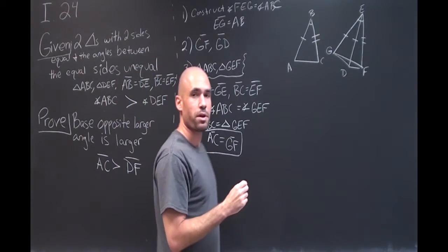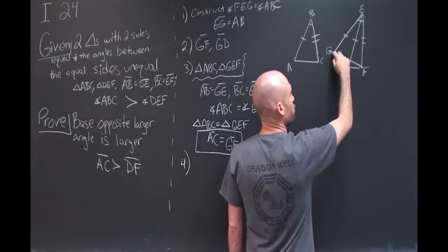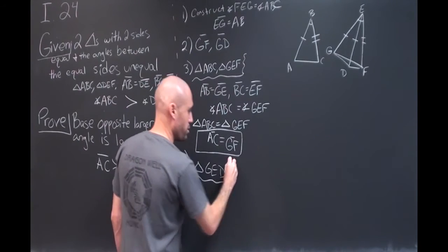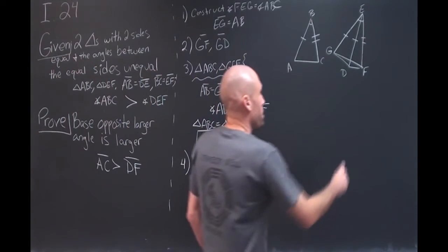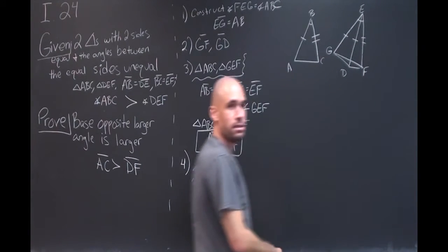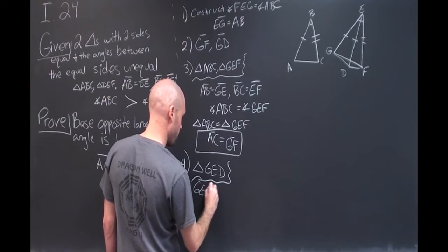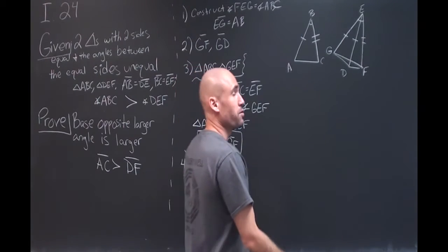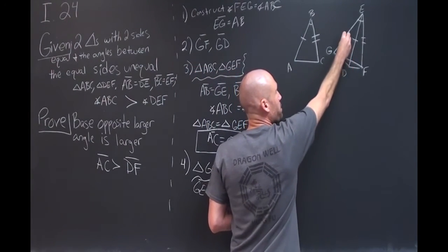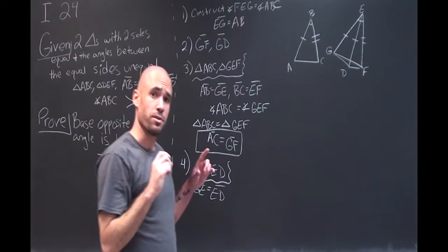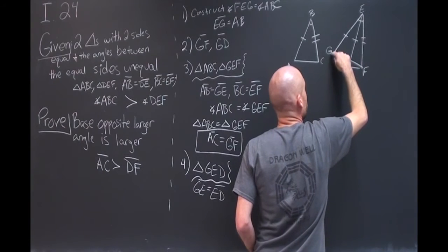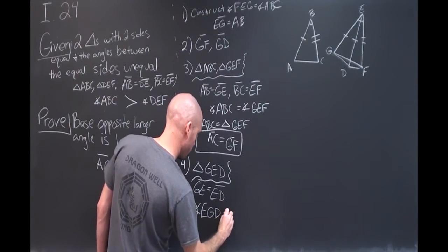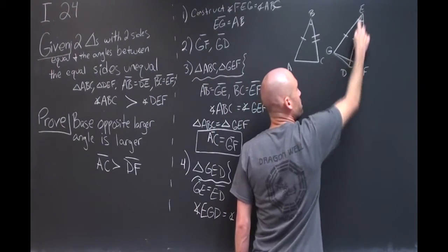The next thing we need to do before we start comparing angles is we need to look at the triangle GED. So again I'll just write that triangle here just so we remember which one we're looking at. In triangle GED we know GE and ED are equal. Therefore we have an isosceles triangle and for an isosceles triangle the angles at the base which are opposite the equal sides, those angles are equal to each other. So angle EGD is equal to angle EDG.